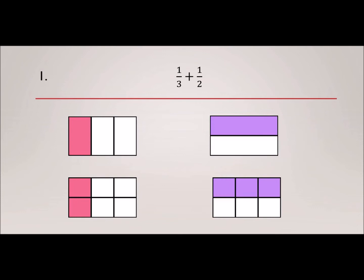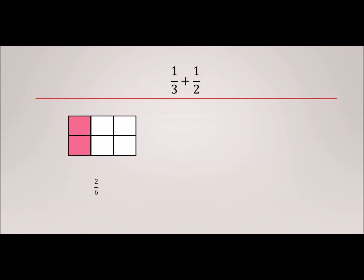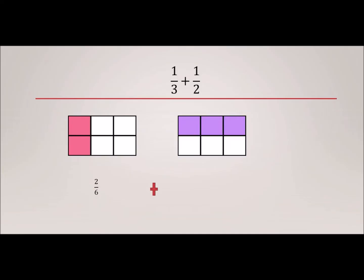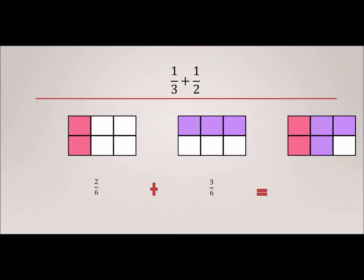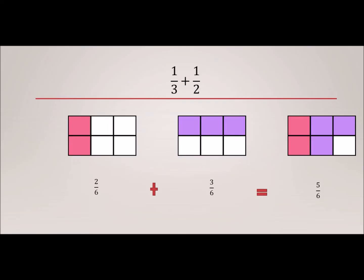So now I have 2/6, because two pieces are shaded out of the whole of six pieces. And the other fraction is 3/6, because three pieces are colored out of the whole of six. Together, we're going to have the two from the pink and three more from the purple, so together we have 5/6 shaded. As long as the denominators are the same, we can add the numerators.